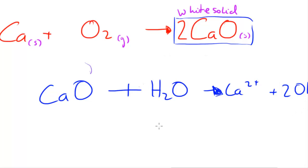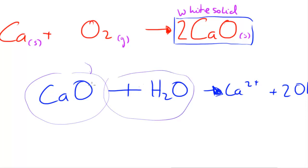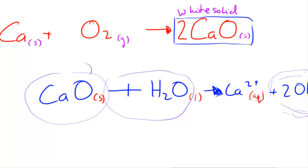So the reason we call group 2 metals alkaline earth metals is that when we add their oxide to water, it produces an alkaline solution by releasing hydroxide ions. Adding state symbols: CaO (s) + H₂O (l) → Ca²⁺ (aq) + 2OH⁻ (aq).